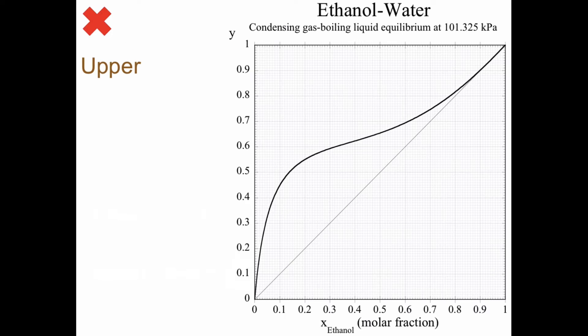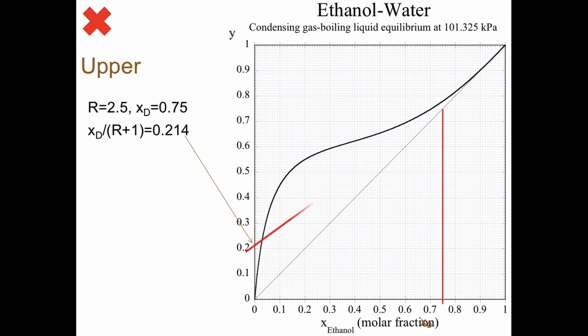So let's start with the upper operating line. R equals 2.5 and xD equals 0.75. I think the easiest way to draw the upper is to know that it is on the diagonal and in xD, and on the Y axis, if X equals 0, then Y equals xD divided by R plus 1, and in this case we get 0.214, and we can draw the line.